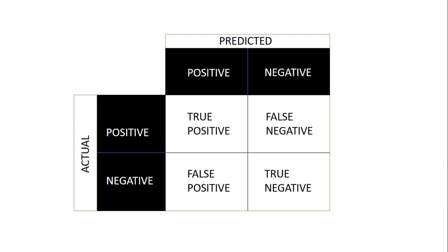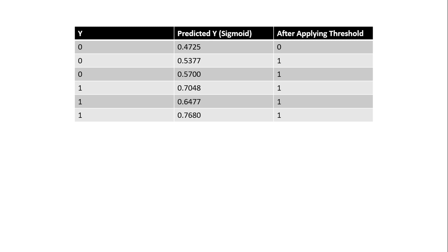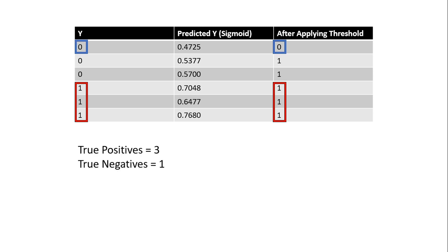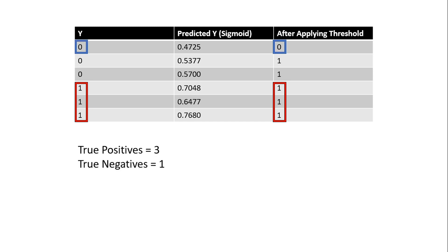This is classification-specific — confusion matrix doesn't work for regression, keep that in mind. Now this is the example we've learned: the number of hours a particular student spends. We are referencing our logistic regression classifier with the confusion matrix, although many other classifiers can work with it. True positives are where y and y_pred are exactly the same, yielding one. True negatives are where y yields zero and y_pred also yields zero.